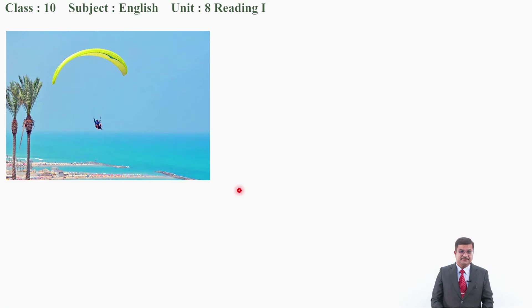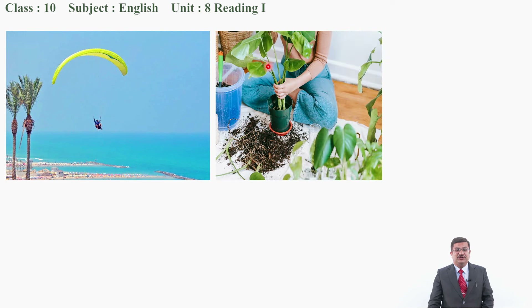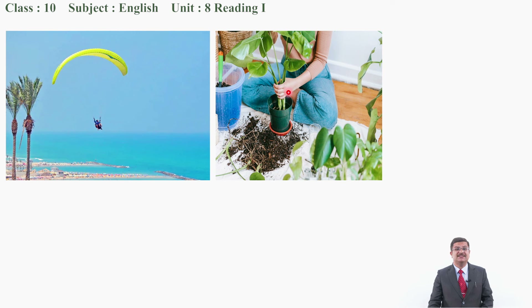What do you see in this picture? Can you identify it? This is a very adventurous picture — a man is paragliding. So what is his hobby? The hobby of this person is paragliding. Next, what do you see in the second picture? A girl is planting flowers. So what is her hobby? Her hobby is to plant flowers.